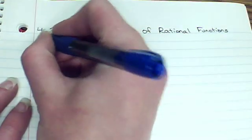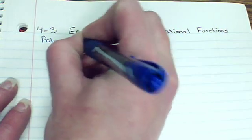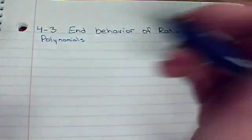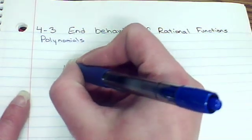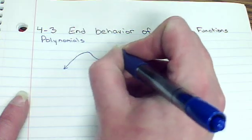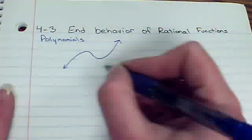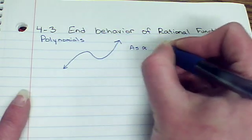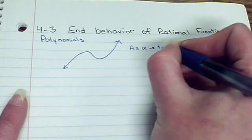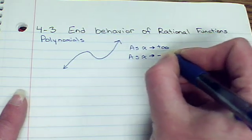So let's review using polynomials. Now polynomials will always just keep going on and on forever, up or down. So let's say we had something like this as our graph. We have two sides to this. We can look at what happens as x goes to positive infinity and what happens as x goes to negative infinity.